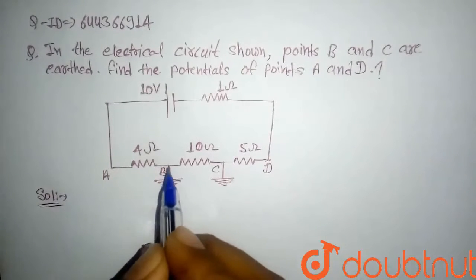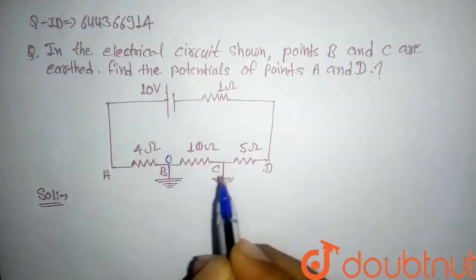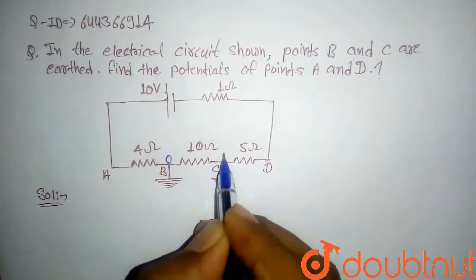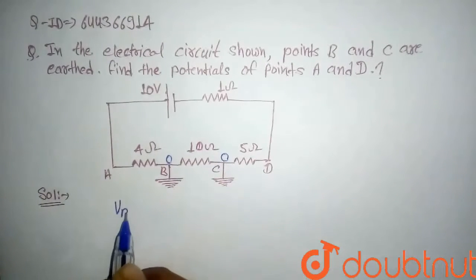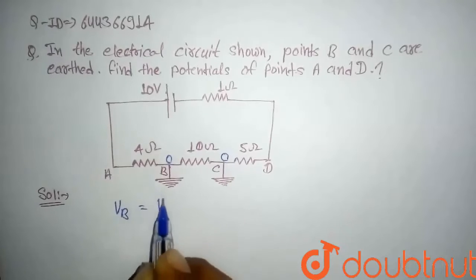This point B is earth, so potential here will be zero. And now this is also earth, so here potential will be zero. So we can say the potential at point B and equal to point C will be zero.